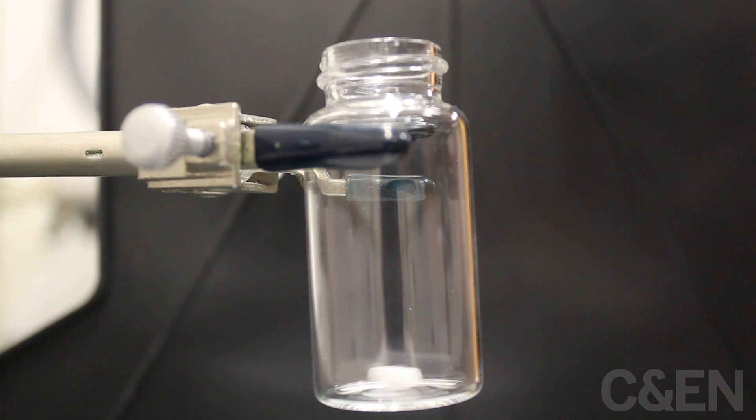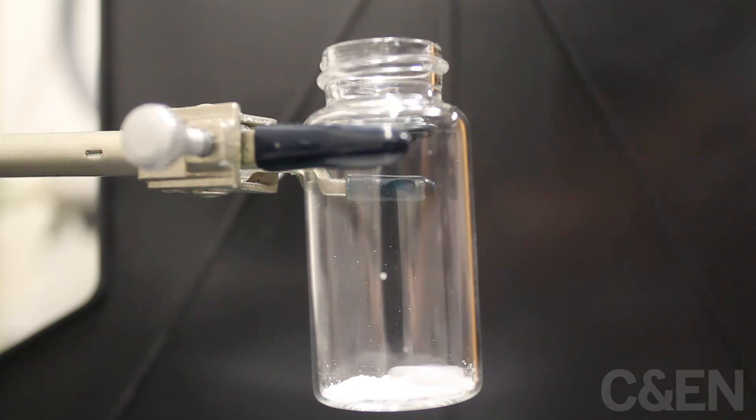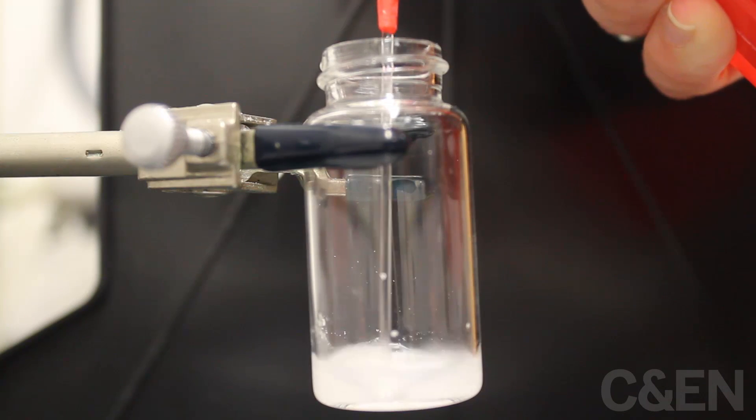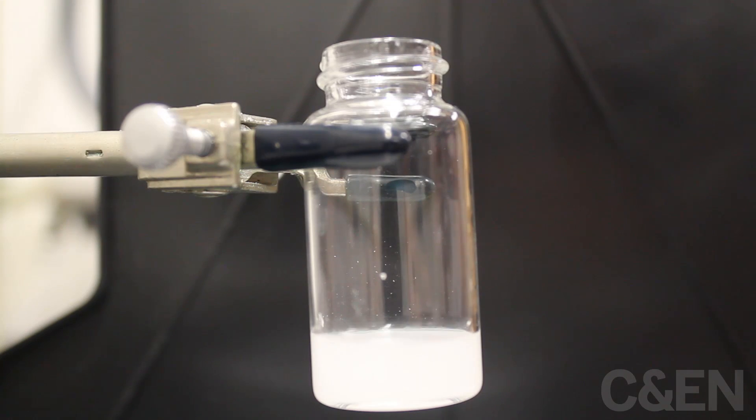For the synthesis of DABO boronates, the first thing we'll do is put the boronic acid in the vial with a stir bar, then we'll add some methylene chloride and get a nice white solution.